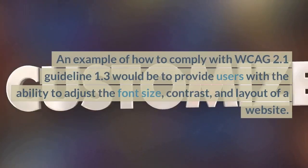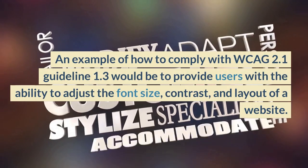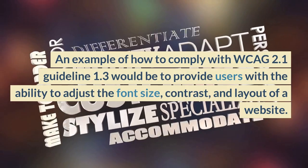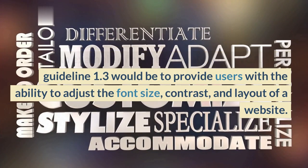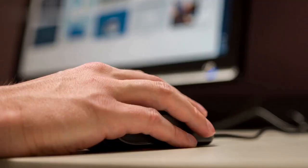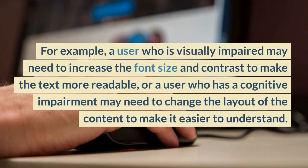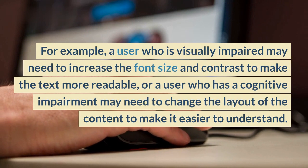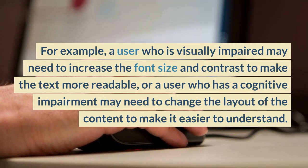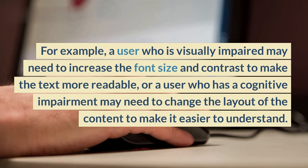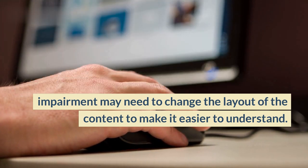An example of how to comply with WCAG 2.1 Guideline 1.3 would be to provide users with the ability to adjust the font size, contrast, and layout of a website. For example, a user who is visually impaired may need to increase the font size and contrast to make the text more readable, or a user who has a cognitive impairment may need to change the layout of the content to make it easier to understand.